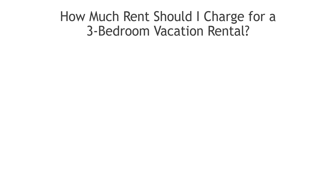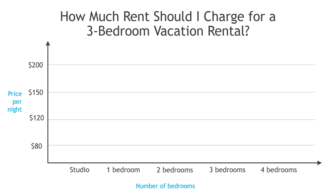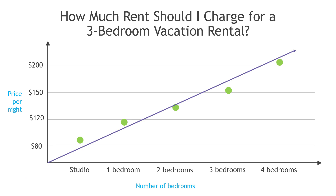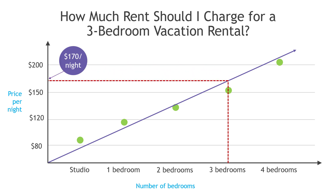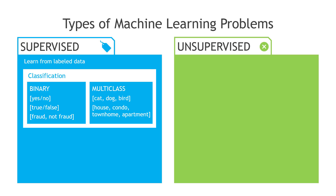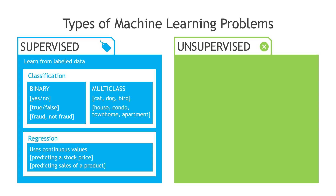Moving on — maybe we're not asking a question that requires a yes or a no, but something like: how much rent should I charge for a three-bedroom vacation rental? In this case, we could use the data to plot out values of other vacation rentals, where we have the number of bedrooms on the x-axis and the price per night on the y-axis. Then we find the line that fits those points, and by using that line, we can connect our three-bedroom rental to a price — we're going to call it $170 per night. That's an example of a regression problem, where you're working with continuous values like rent prices, stock prices, or predicting the sales of a product.